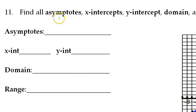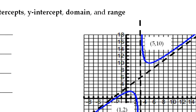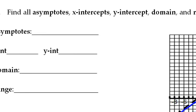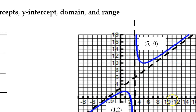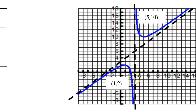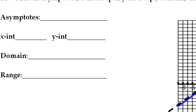For number 11, we're supposed to find the asymptotes, x-intercepts, and y-intercepts, but we're given the graph so it makes it kind of easy. Starting with asymptotes, I see two: a vertical one and a slant asymptote. The vertical one is at 3, so that's x equals 3. Make sure you don't just say 3 — you have to say x equals 3 to show that it is a vertical asymptote.